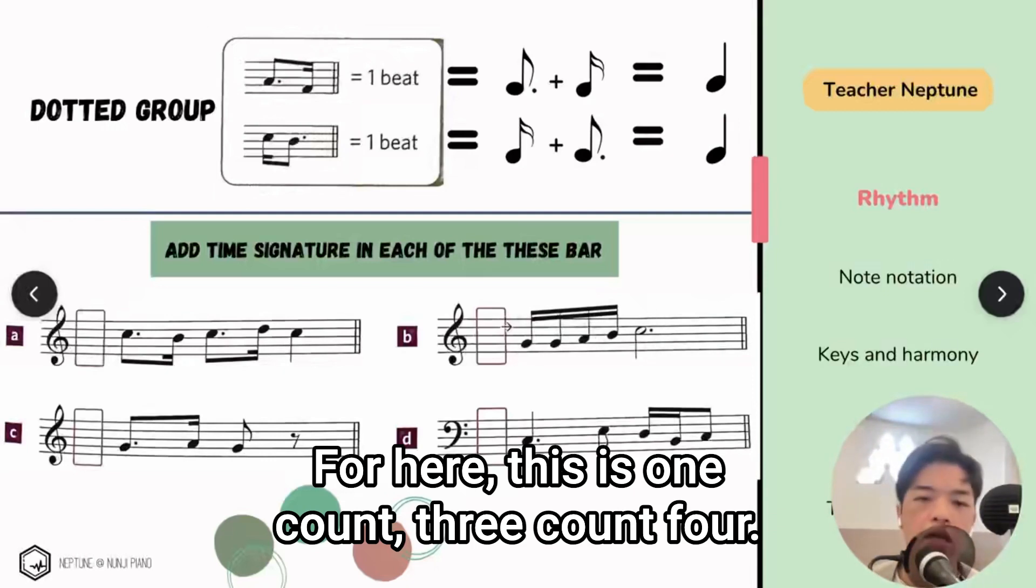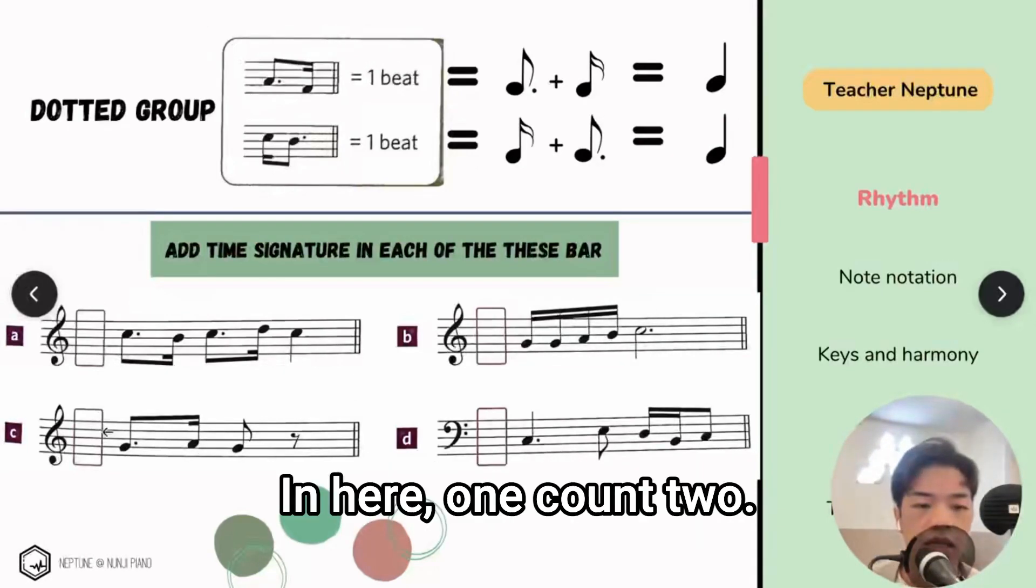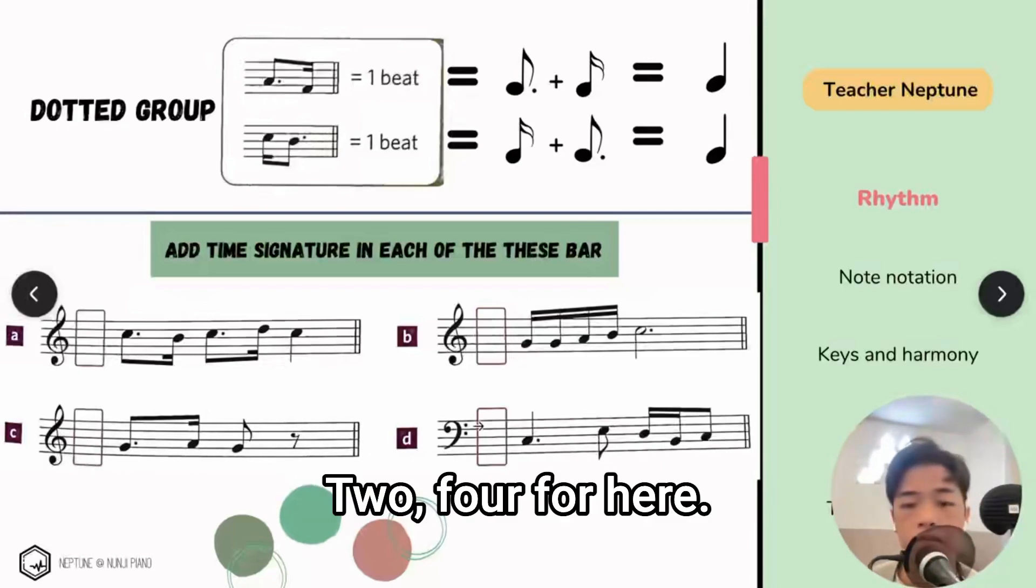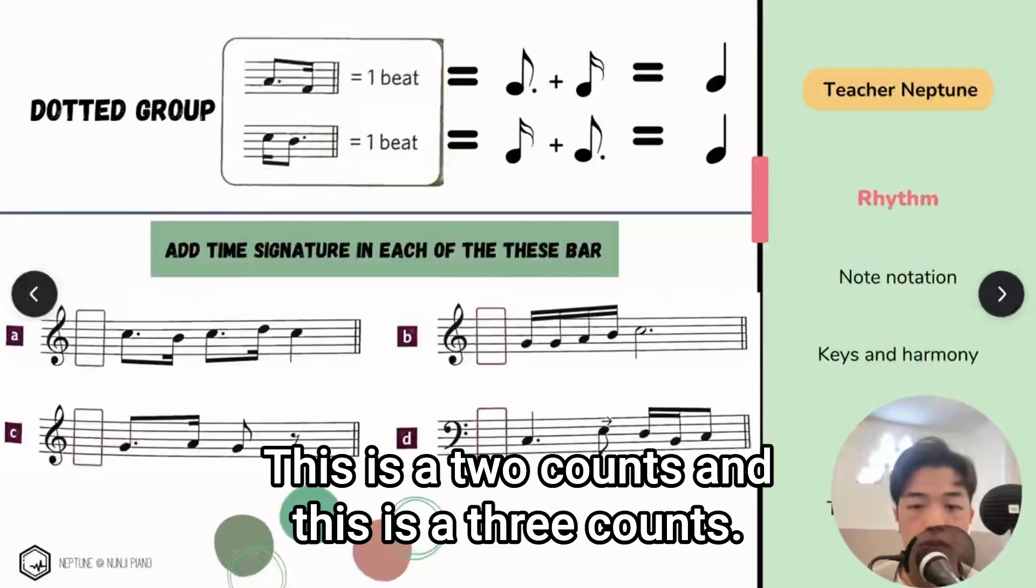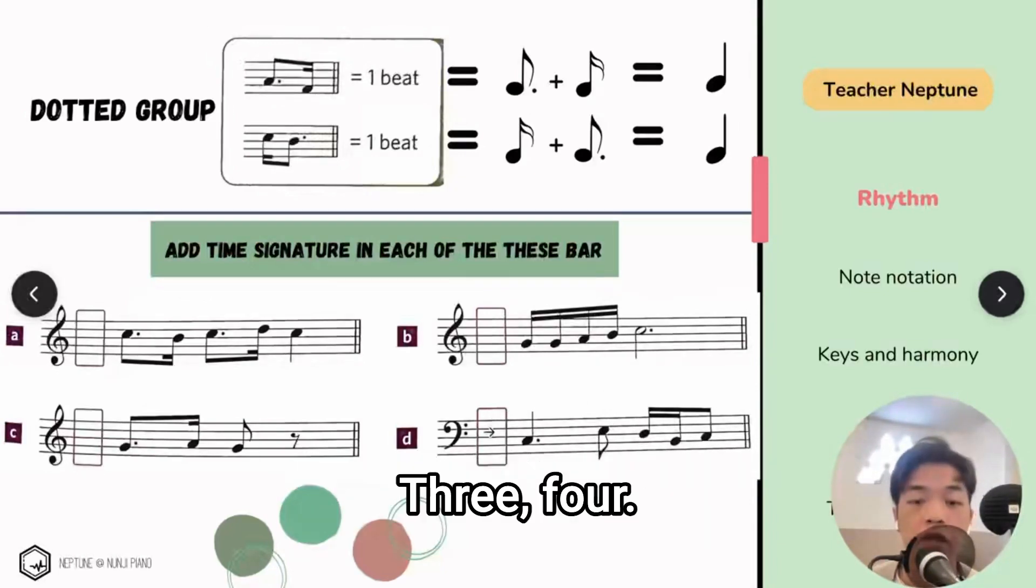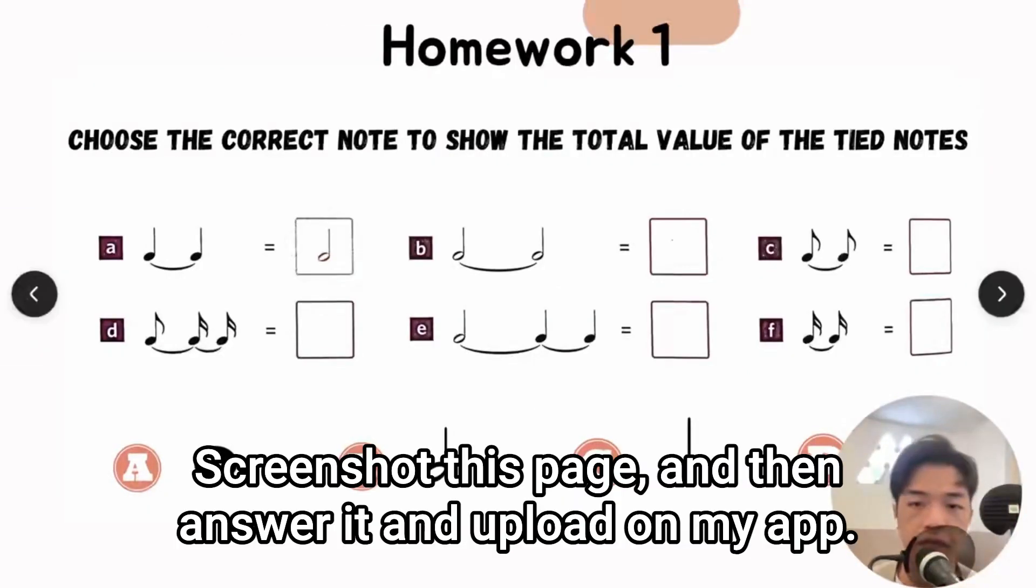For here, this is one count, three count, four four. In here, one count, two count, two four. For here, one count, one count, one count, and half plus half, this is two count, and this is three count, three four. This is a homework. Screenshot this page and then answer it and upload on my app.